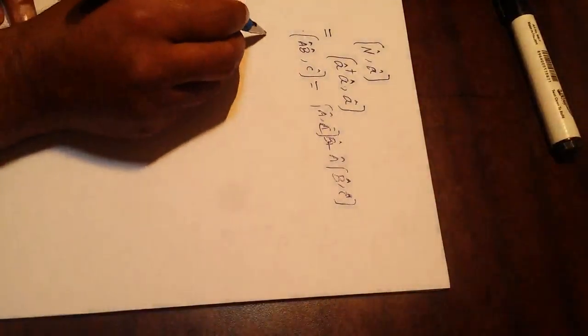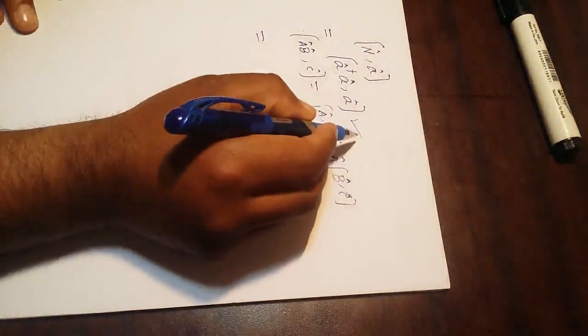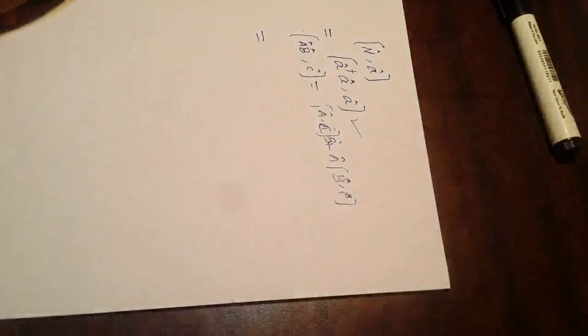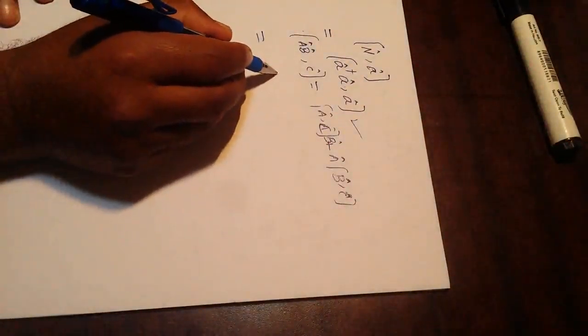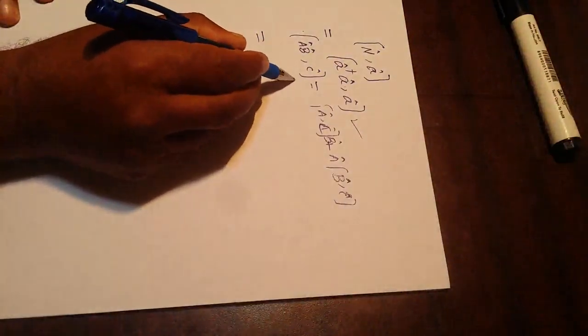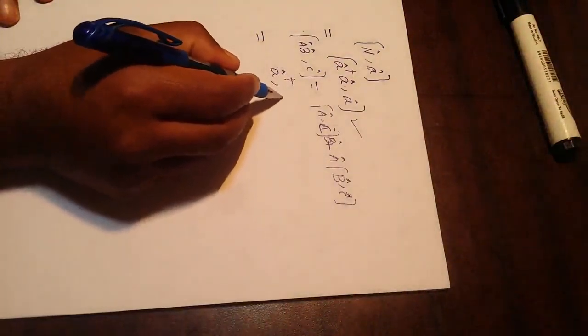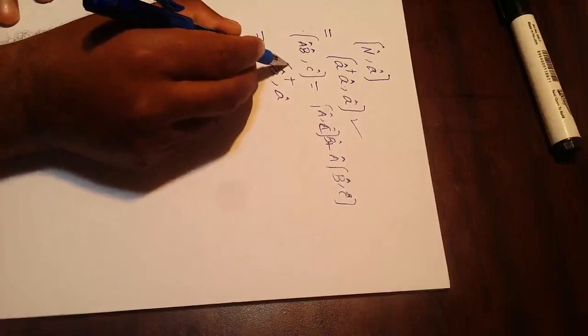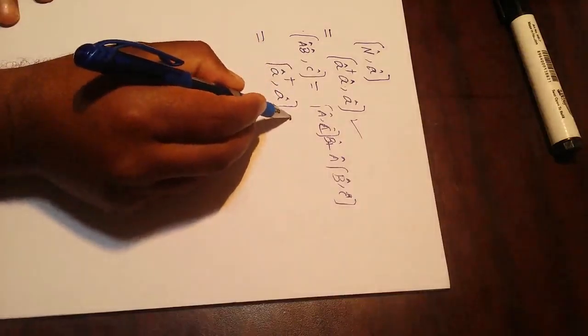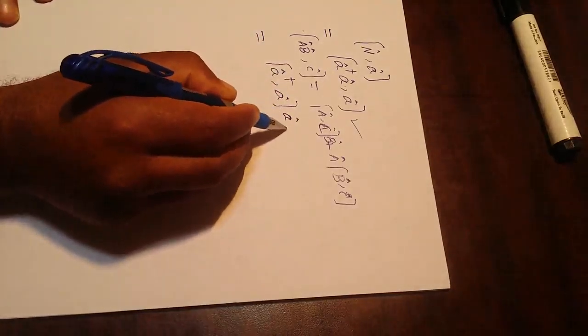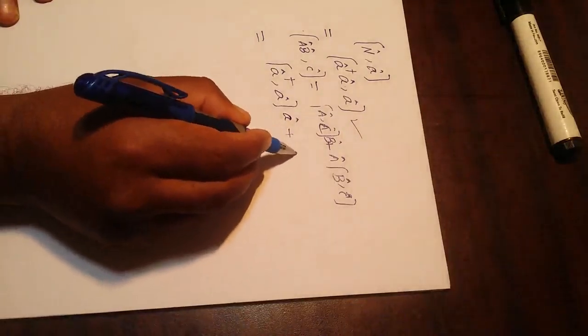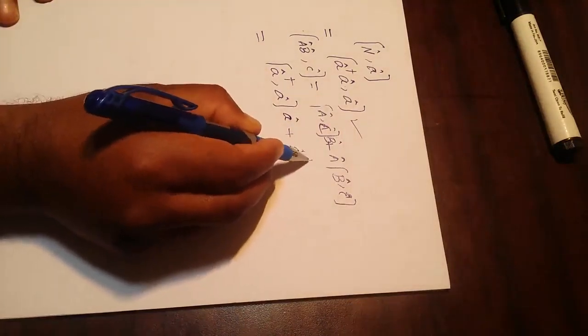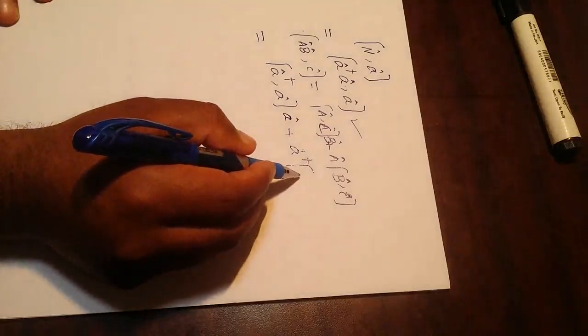So similar property will be used over here. When we use this property, it will be equal to the commutator of a dagger with a, times a, plus a dagger times [a, a].